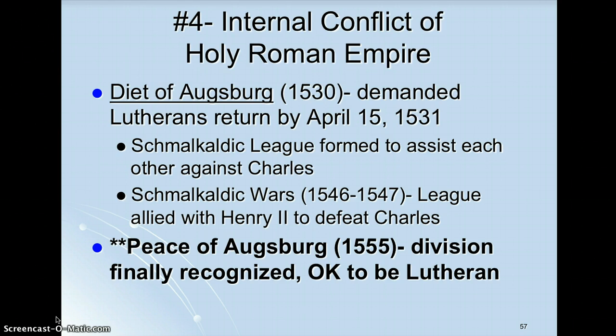So four problems to review: first problem is Francis and the French; second problem, Suleiman and the Ottomans; third problem is the Pope — so he sacks Rome and ends that. By 1530 he's ready to deal with problems in his own empire. He attempts to do battle with the Protestant princes, loses the Schmalkaldic Wars, and is forced to recognize the Peace of Augsburg in 1555. He will then abdicate and go into retirement, and we will get a new Holy Roman Emperor. The division is officially recognized in 1555, and it is okay to be Lutheran.